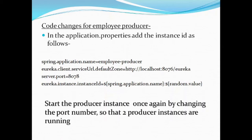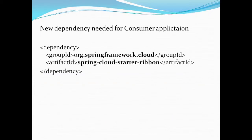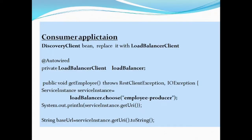In this example we start with two producer instances, and if the workload increases we can deploy even more. For the consumer application, we need to add a new dependency called spring-cloud-starter-ribbon. Instead of using a DiscoveryClient, we replace it with a LoadBalancerClient — we create a reference of LoadBalancerClient, provide the producer instance name, and retrieve an instance to consume the application.